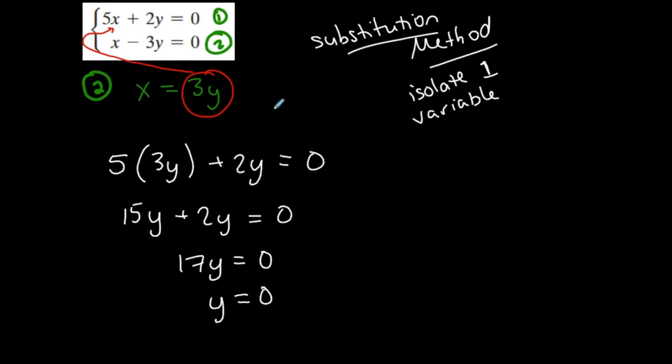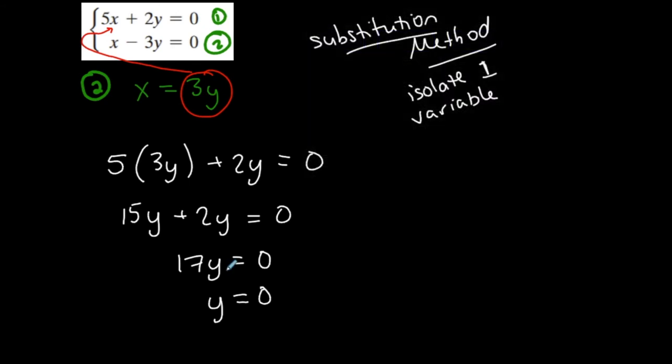Now, technically I'm not done because I only found one coordinate. I'm able to actually solve for y. That means that this system has a solution. It has one solution. So it's that situation where the lines intersect at one point. So it's going to be a consistent, independent solution or independent system.